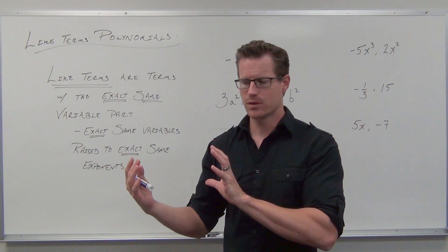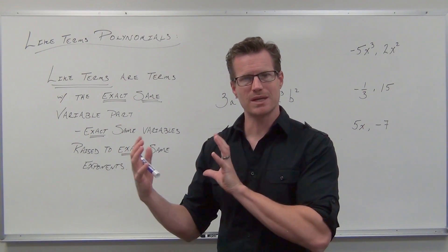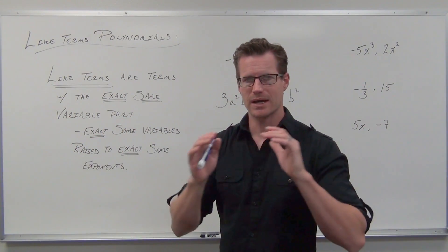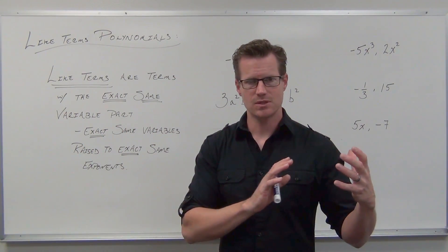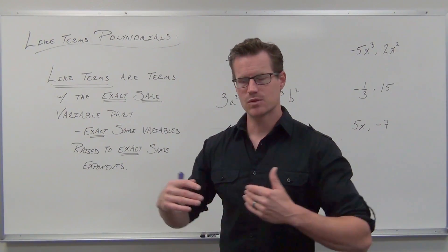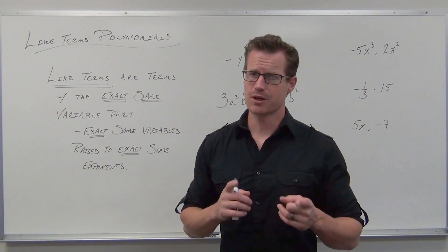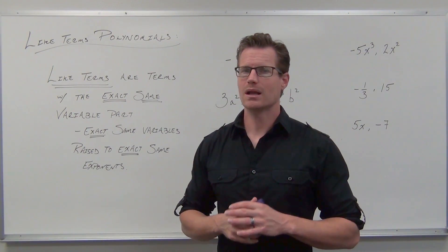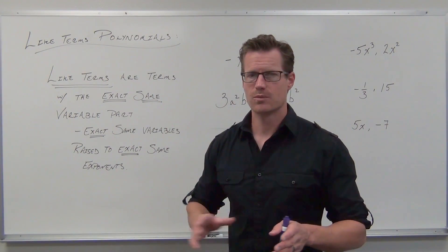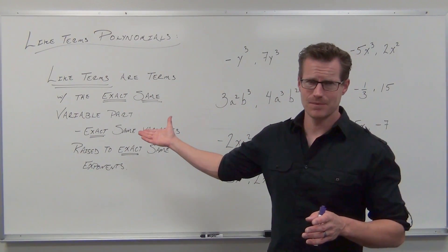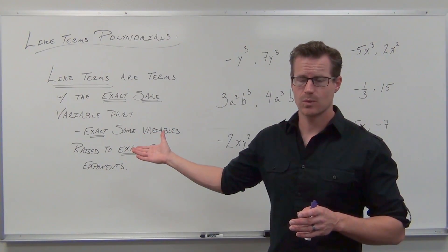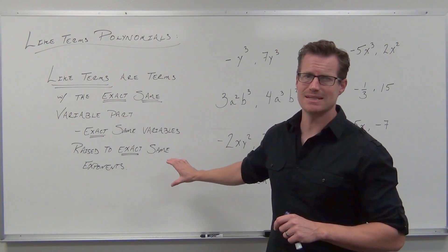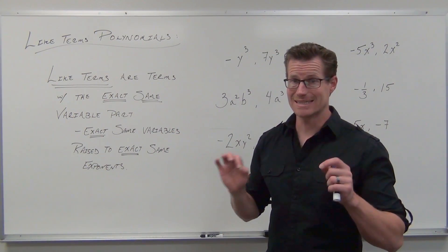We know what terms are — things connected by multiplication or division. We know what polynomials are — things that have terms separated by addition and subtraction. Sometimes we can add those terms together, sometimes we can't. You need to be very good at knowing when that is. It all stems from knowing what like terms are. Like terms are terms with exactly the same variable part: exactly the same variables raised to exactly the same exponents. I mean exactly.